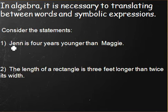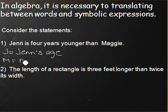Let's look at one example. We see that Jen is four years younger than Maggie. We can rewrite this in symbolic expression if we let J equal to Jen's age and M be equal to Maggie's age.